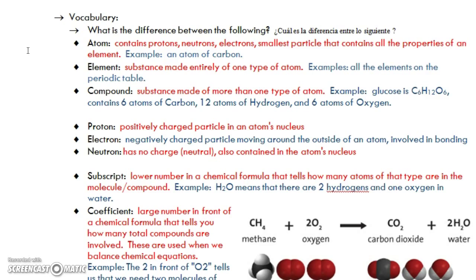A proton is in an atom's nucleus. It is positively charged. An electron is negatively charged, and it's going to be swirling around the outside of an atom. And a neutron has no charge. That's where it gets its name, it's neutral. And it is also inside the nucleus. That's what gives an atom its weight or mass.